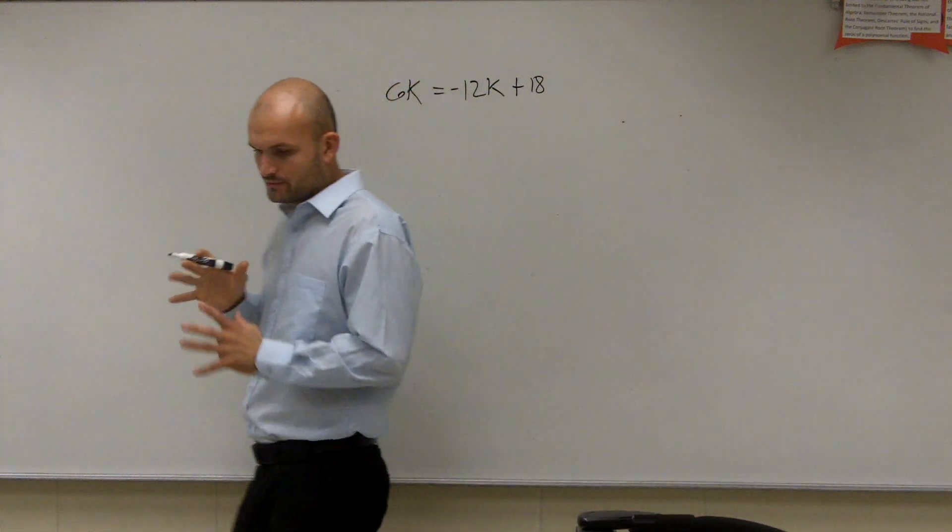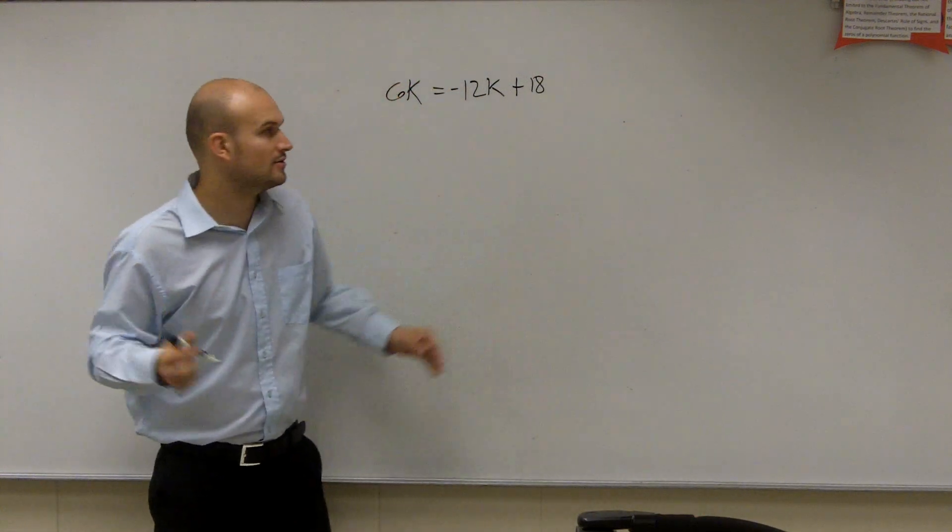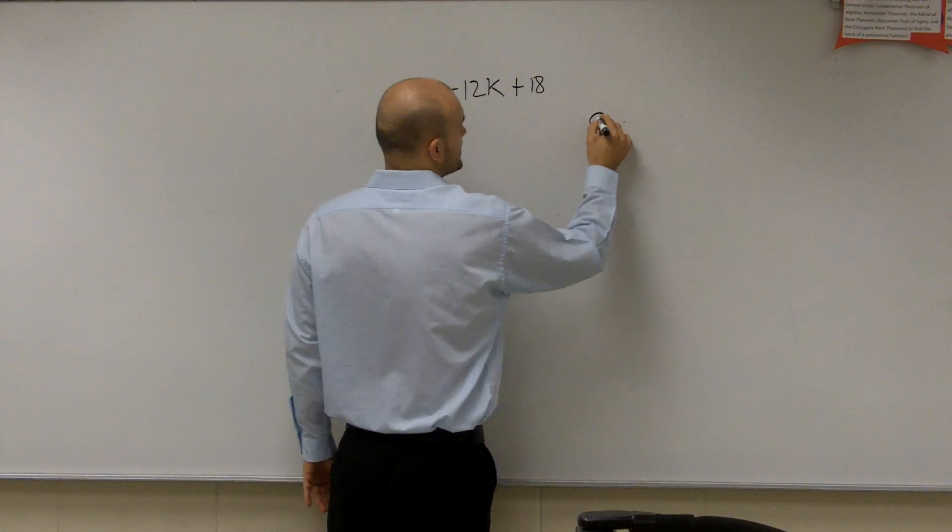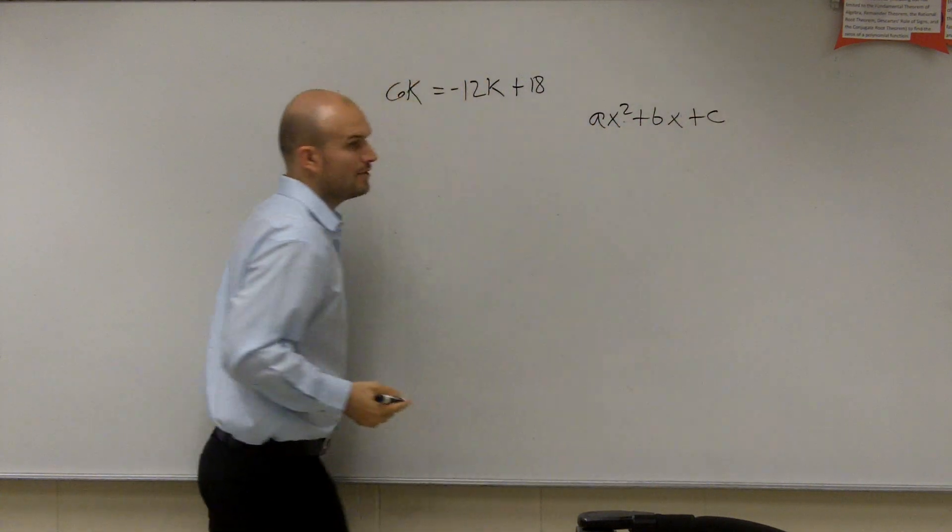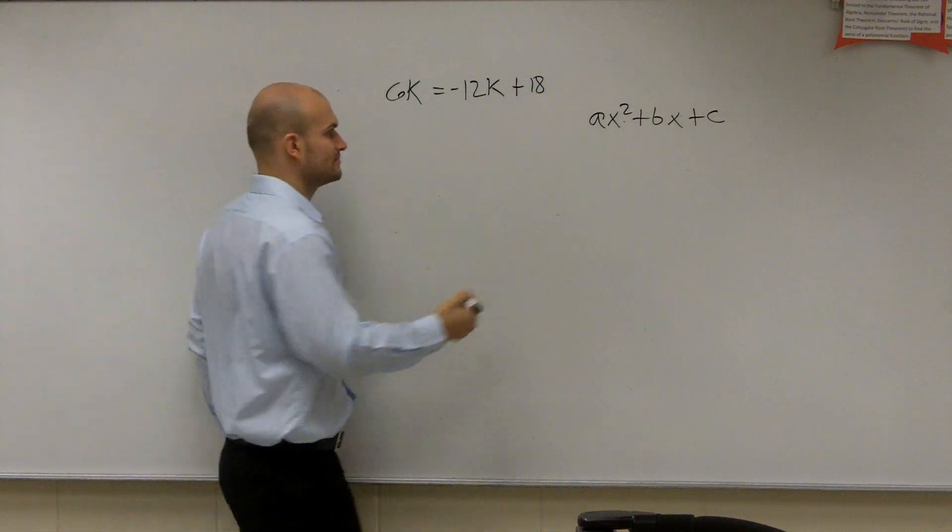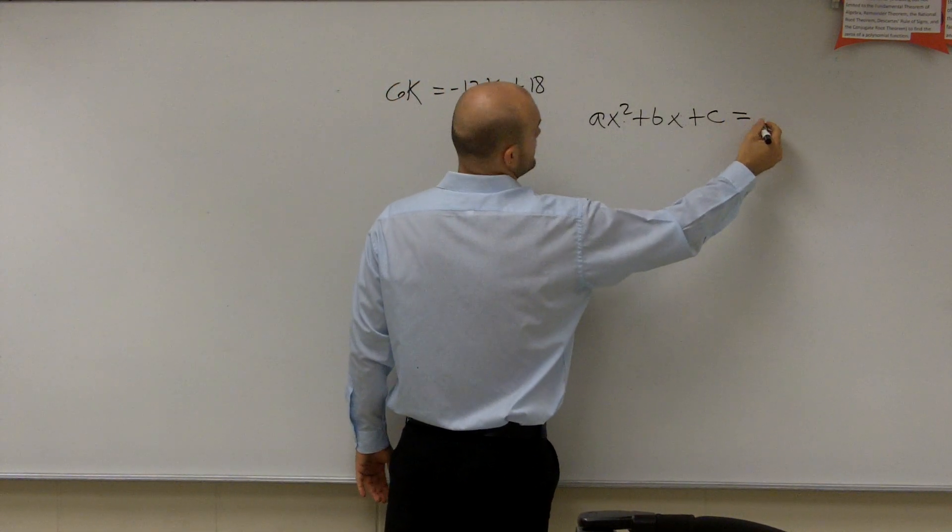So the main important thing that we want to look at is we want to determine, is this a quadratic? And remember, our quadratic form comes in ax squared plus bx plus c. And we want to take a quadratic and let's just say it is equal to 0.